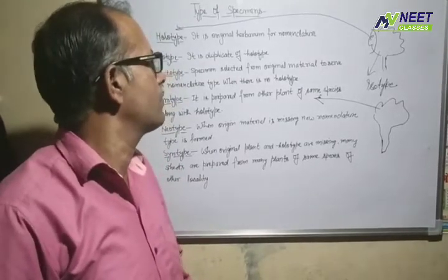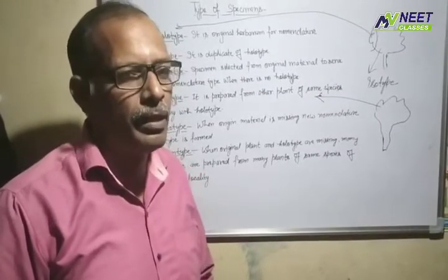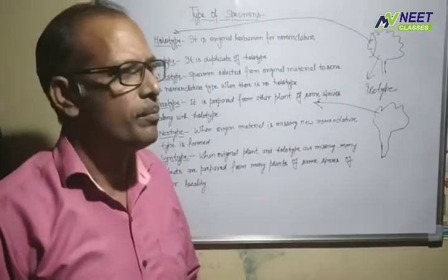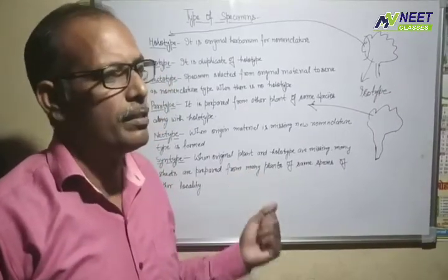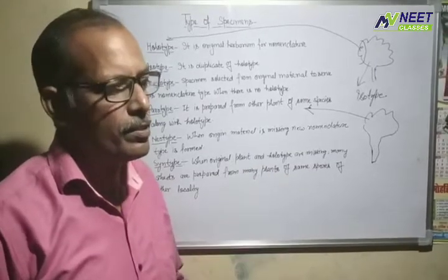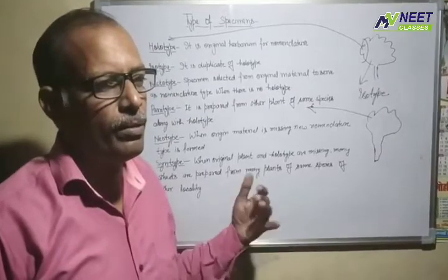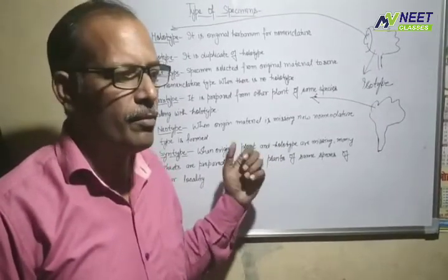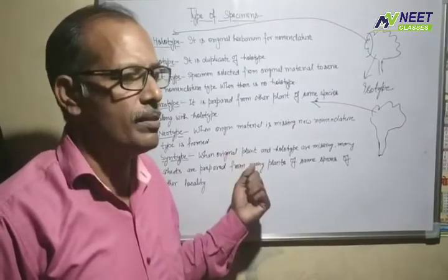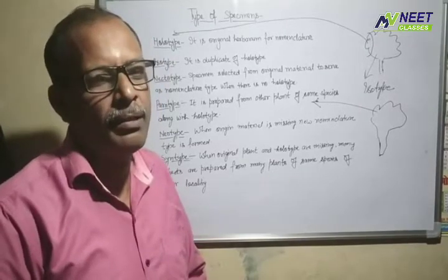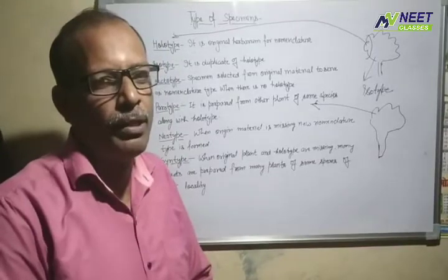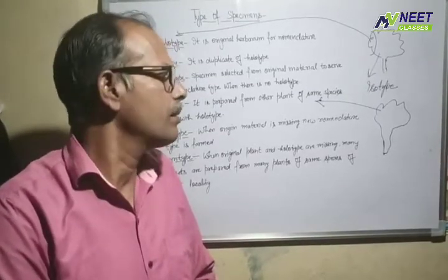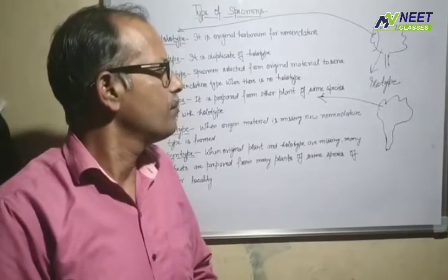So, researchers or scientists who discover new plants or new animals and assign scientific names must use types of specimens. That covers this topic on types of specimens. We will now move to a new topic related to the living world, nomenclature, and taxonomy. If you have any questions, you can send them to us and we will address them in the next lecture.